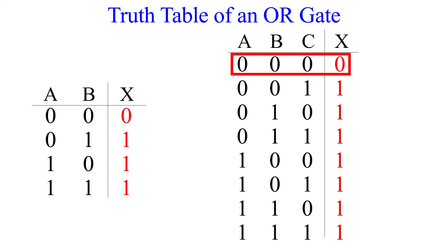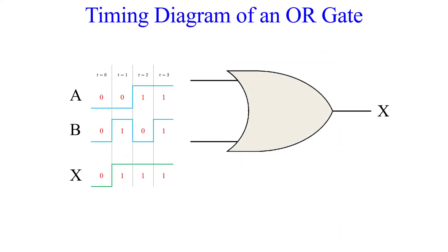Now let's move on to a timing diagram. Here we have the timing diagram of the OR gate. Again, this is the same as the truth table. At t equals 0, both inputs are low. At t equals 1, input A is low and B is high.